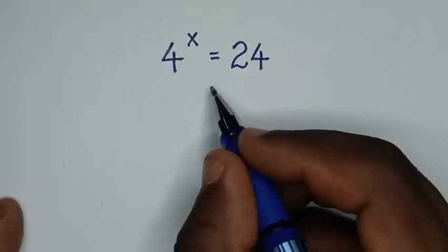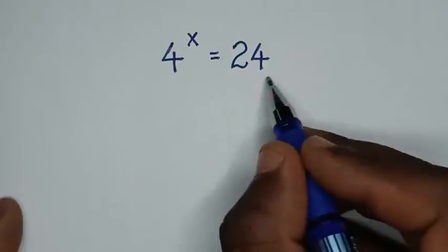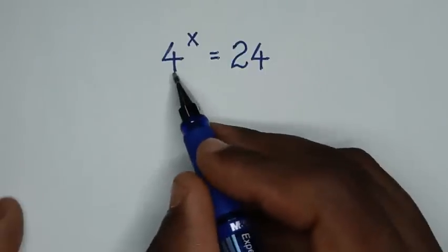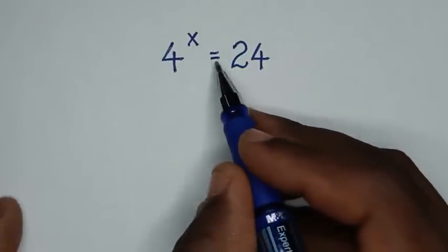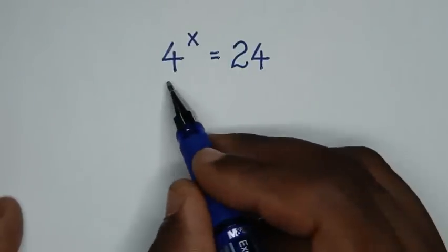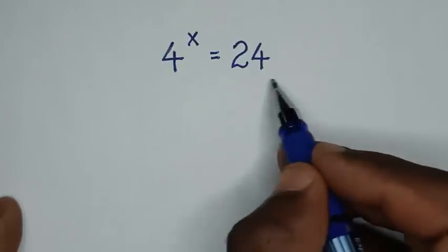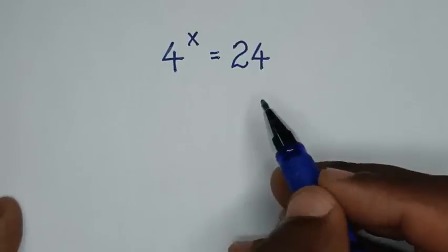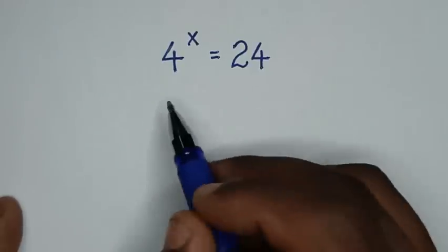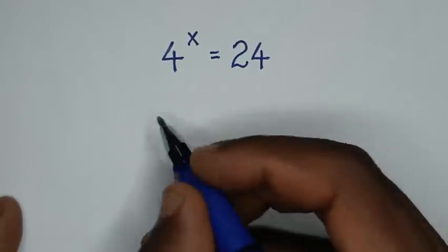Hello, you are welcome to solve this math problem, which is 4 power x is equal to 24. To find the value of x from this equation, in the first step we will apply log in both sides.